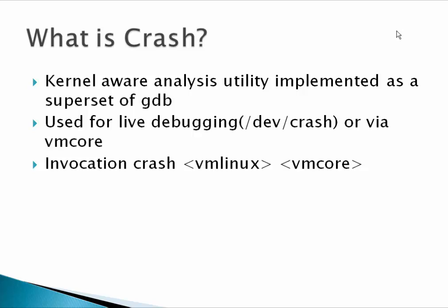We just need to pass the vmlinux file — which we'll discuss shortly — and the location of your VM core to this crash utility for analysis. If you want to do some live debugging, you can also do it with something called /dev/crash, which is used by default for live memory image. It only provides read-only mode access, but I'm going to show you how that works.